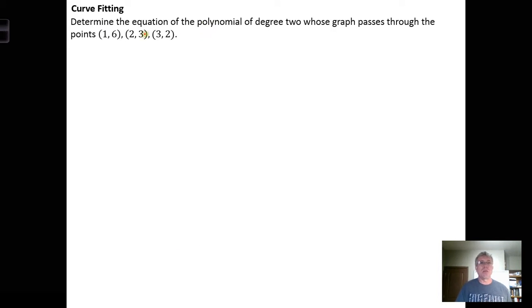Determine the equation of the polynomial of degree 2 whose graph passes through the points (1, 6), (2, 3), and (3, 2).